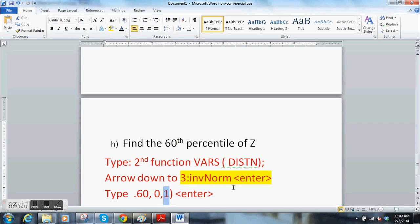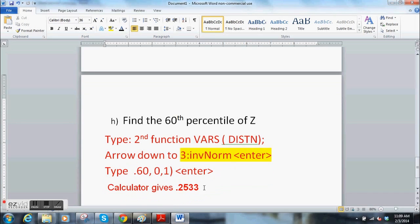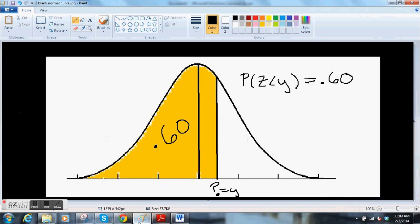And 0.6, comma. I'm doing this live. 0, comma, 1, end parentheses. It's so fast. And it gives you 0.2533. So if we go to our picture, we're saying this number here equals 0.2533. When we did it on the tables, we said it was between 0.25 and 0.26. So we are correct. It's a little bit closer to 0.25, but it's okay. We can sleep well at night. It's close enough.